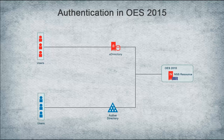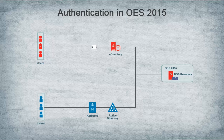When an Active Directory user attempts to access NSS resources, authentication is controlled by Active Directory using CoBIROS. For eDirectory users, authentication is controlled by eDirectory.